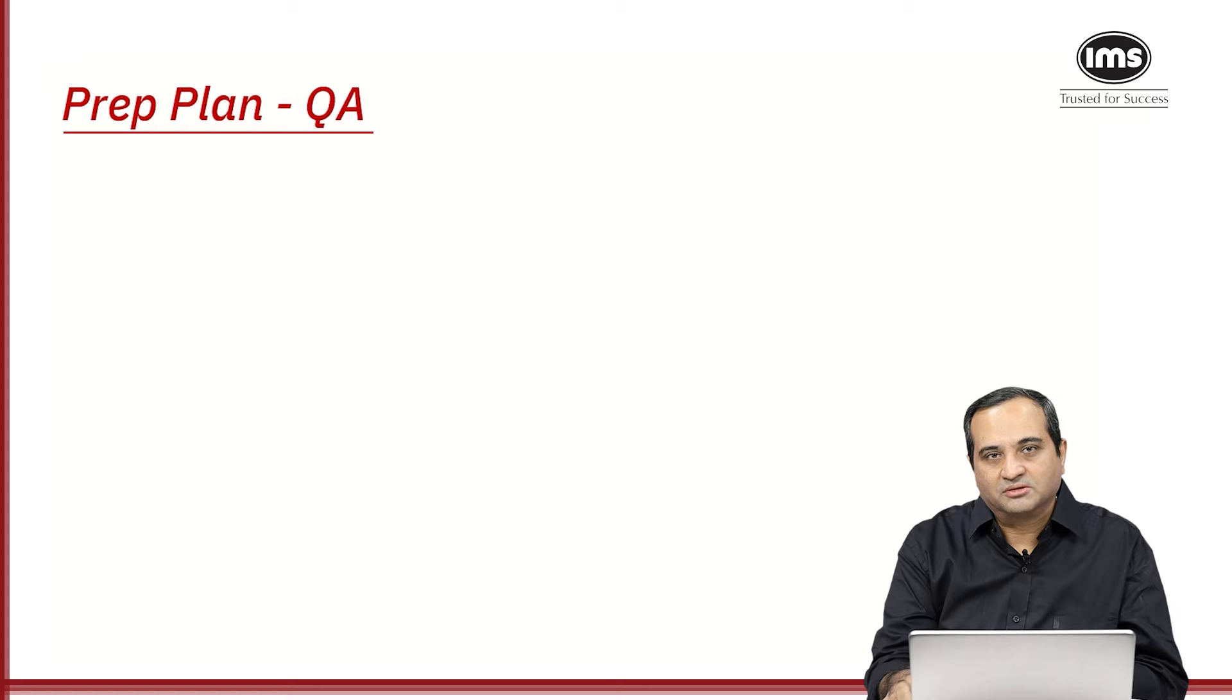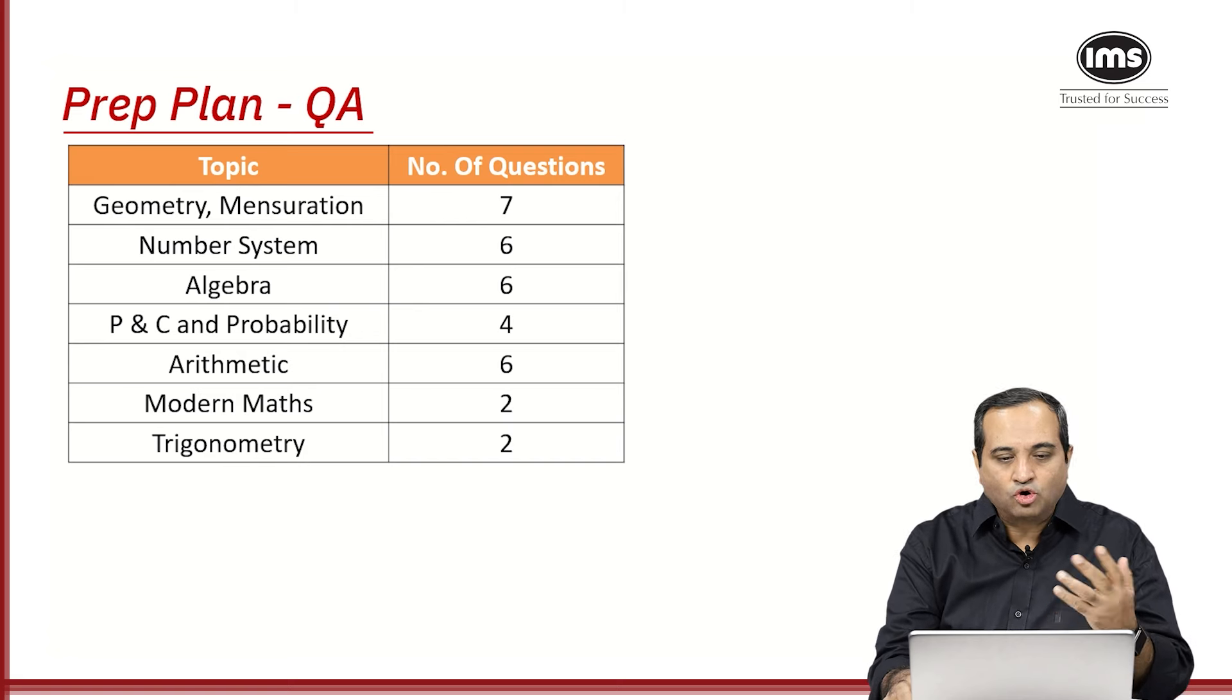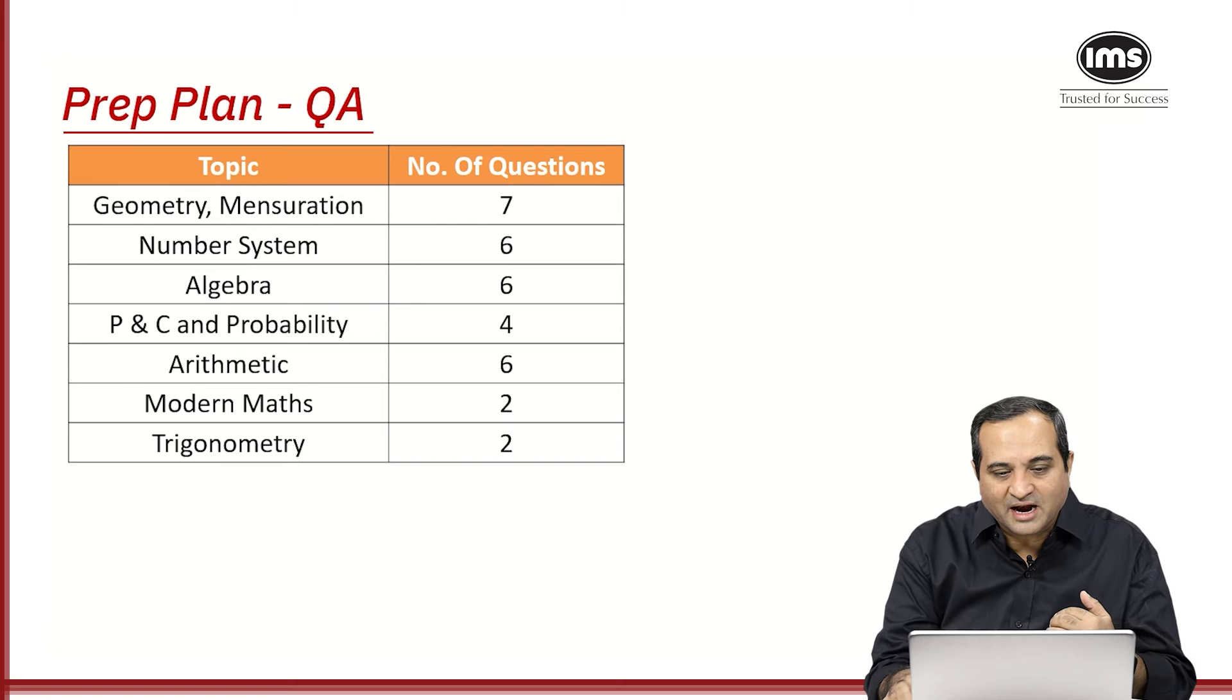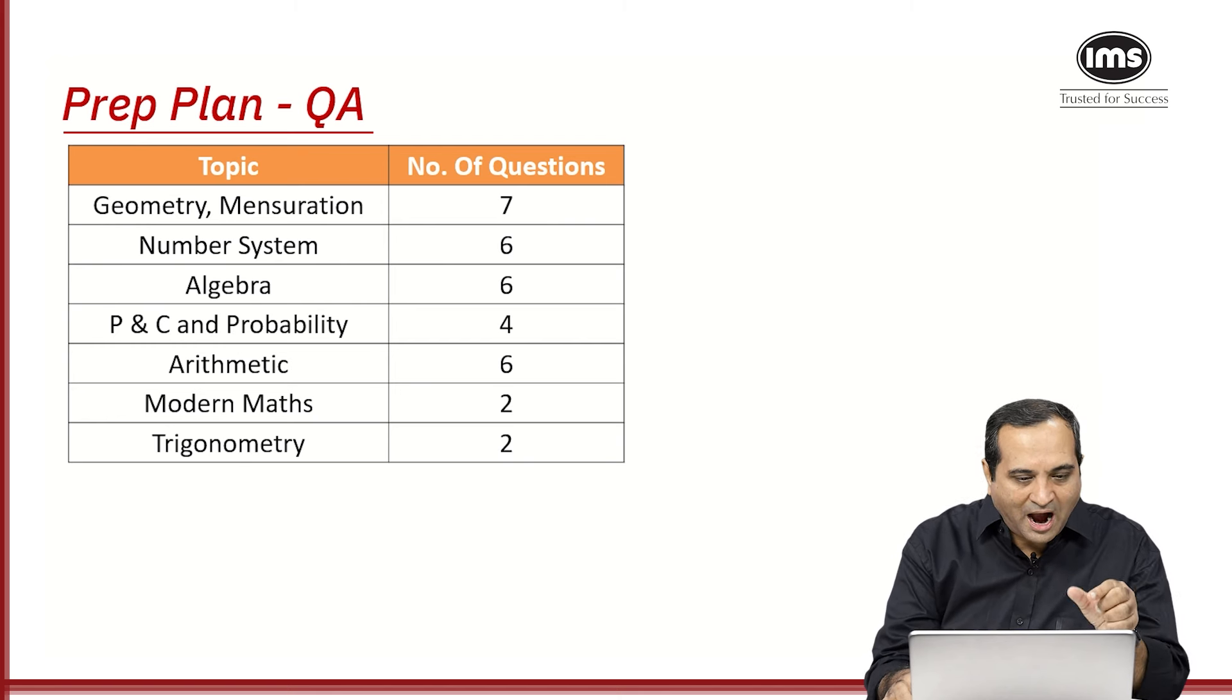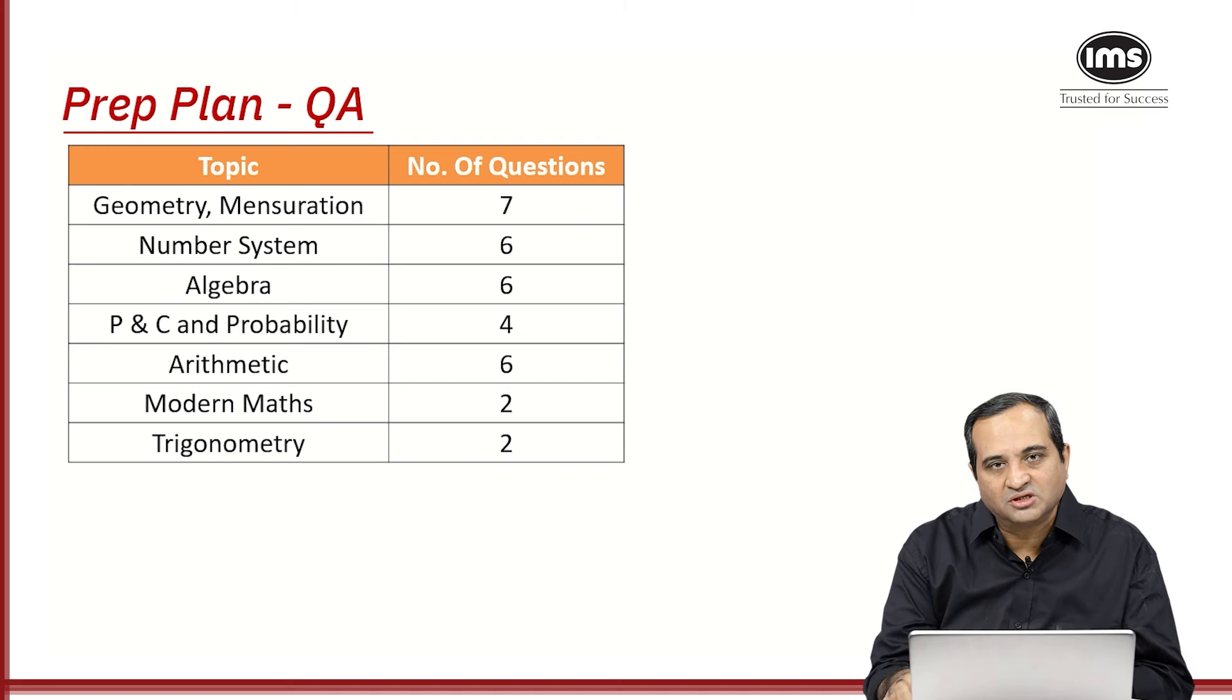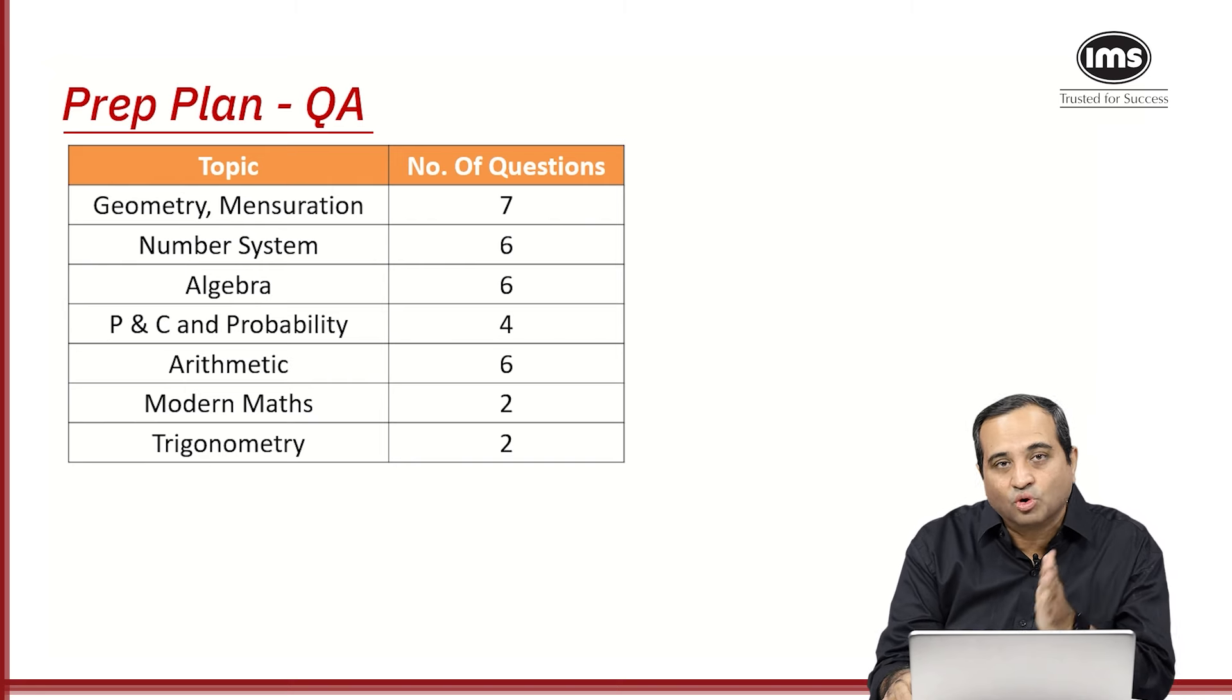The QA section. If I look at the QA section, these are the various topics that you get. Again, there could be one or two questions here and there. That means I can get maybe seven or eight questions from algebra and lesser number of questions in geometry. That is a possibility. But more or less, this has been the distribution for the last two years as far as JIPMAT is concerned. So identify the areas from where you get maximum number of questions and practice those areas first. Try to make sure that you cover variety of questions from those areas.